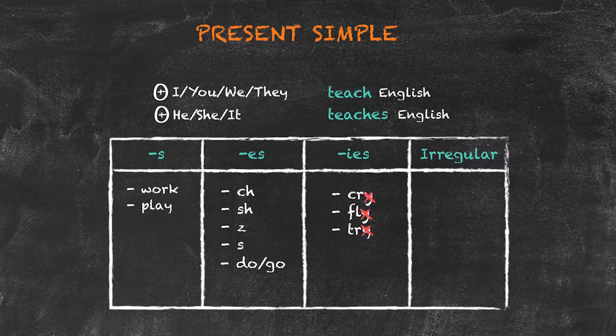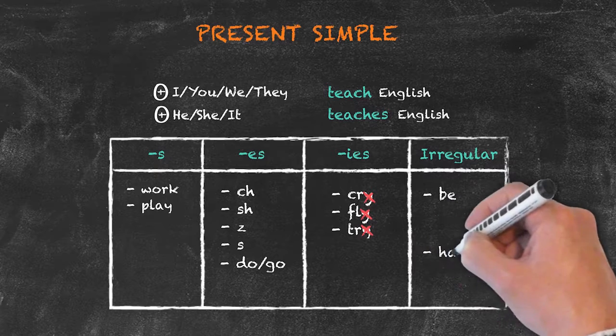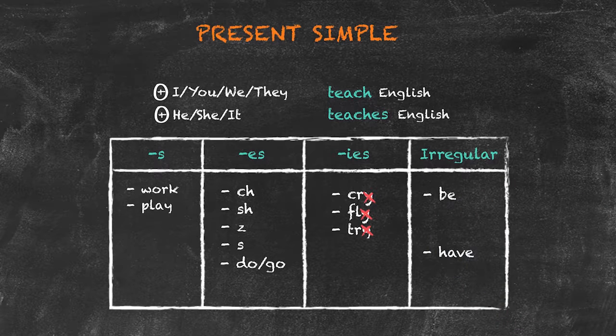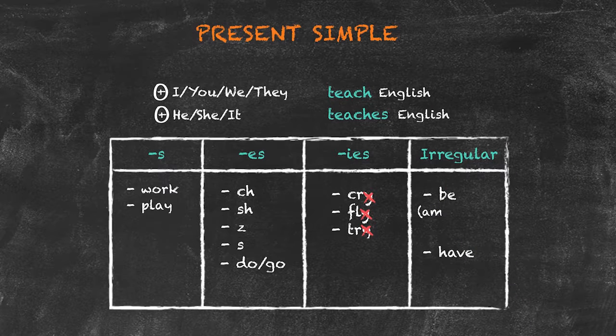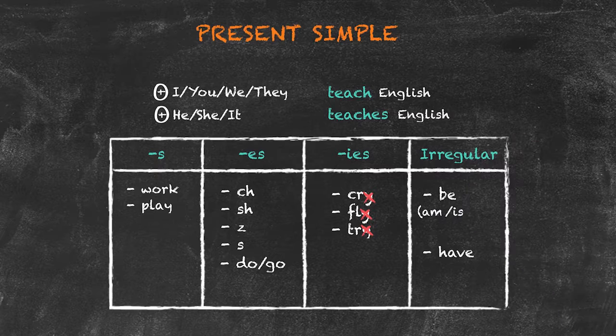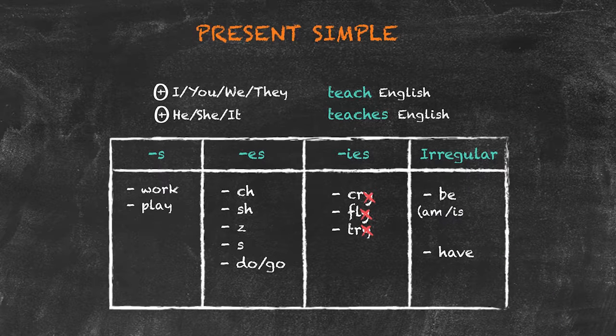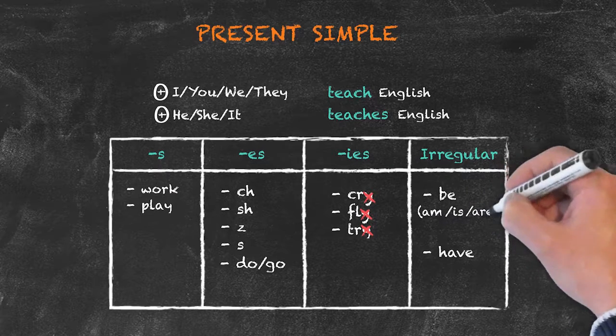Finally, we have our irregular verbs be and have. For subject I, we use am. For the subject he, she, and it, we use is. Whereas with you, we, and they, we use are.